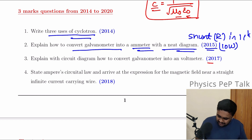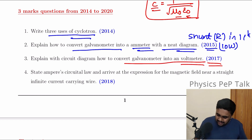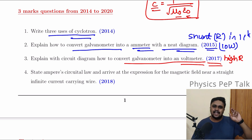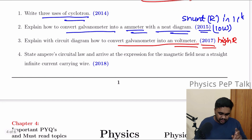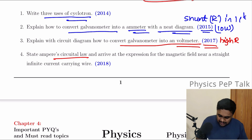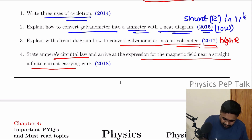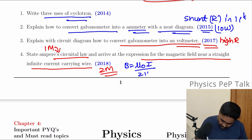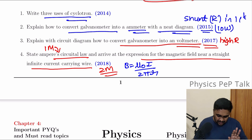In 2015, explain with circuit diagram how to convert a galvanometer into a voltmeter. Here we connect the galvanometer to a high resistance. You can easily score 3 marks from this. State Ampere's circular law and arrive at the expression for magnetic field near a straight infinite current carrying wire. In Ampere's circular law you get 1 mark, and the derivation gets you 2 more marks. The expression is B is equal to mu naught i by 2 pi r.